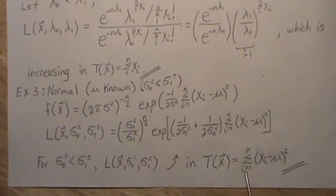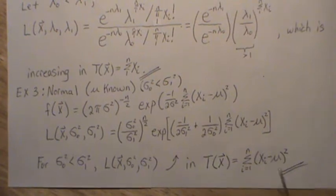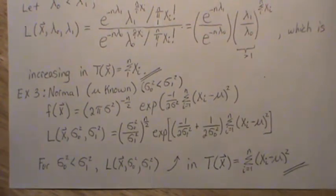So for this condition, the likelihood ratio is increasing in the statistic the sum of (xi - μ)². Now some would maybe divide this by n minus one, so you could divide by n minus one here, multiply by n minus one, and then the statistic becomes the sample variance.